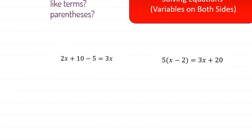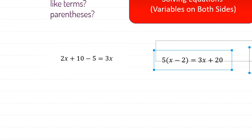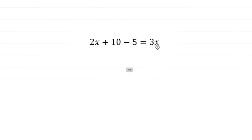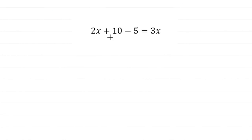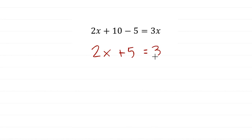Let me show you what that looks like with number one. Looking at the left side of the equation, I see 10 minus 5 — we can actually simplify that. So I'm going to rewrite this as 2x plus 5 equals 3x. It looks very similar to other problems we've done. We just have variables on both sides of the equation.